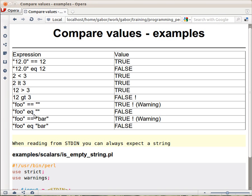Of course, if you had used eq, then you would get false here. The same here, if you compare the string foo with the string bar using equal equal, you will get true and the warning. If you use them with eq, then you get false as you expected.